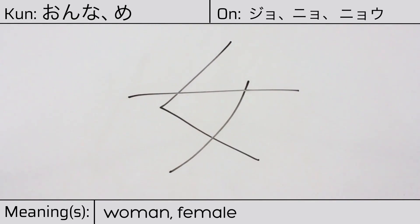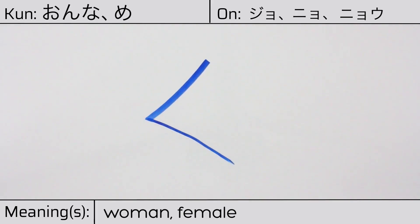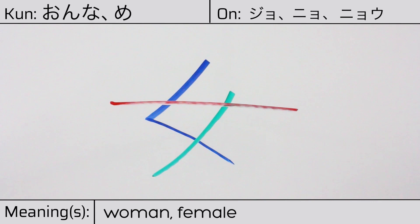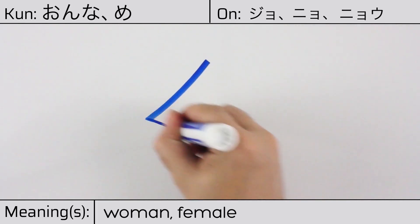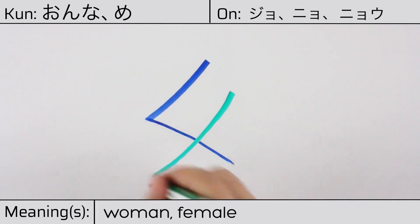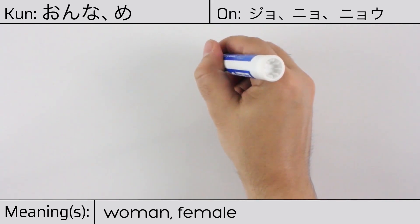This character is made up of the following radicals or parts: katakana ku, ichi or kanji number one, and katakana no. This kanji was originally drawn with two hollows in the middle, representing breasts, similar to the character ha-ha or mother. Now only one remains, and the character looks similar to a woman kneeling or standing.